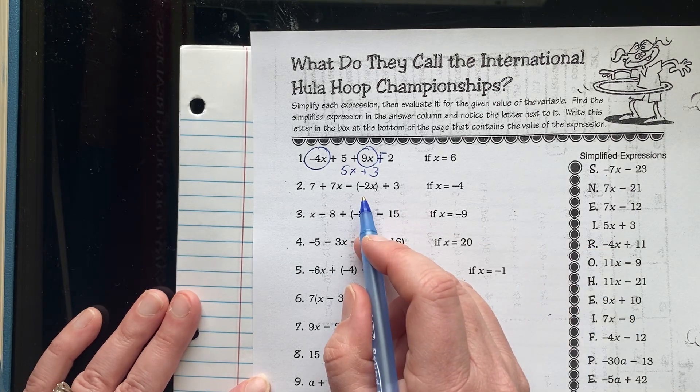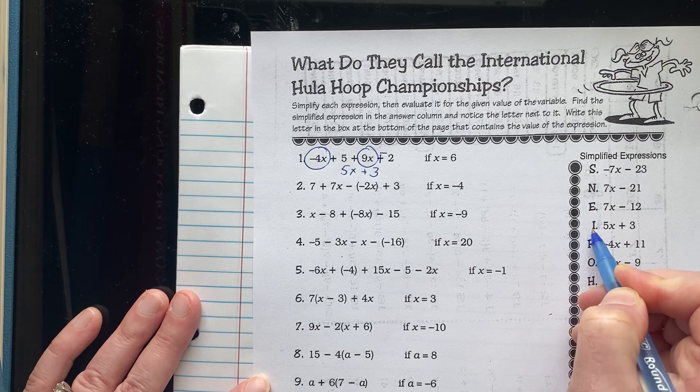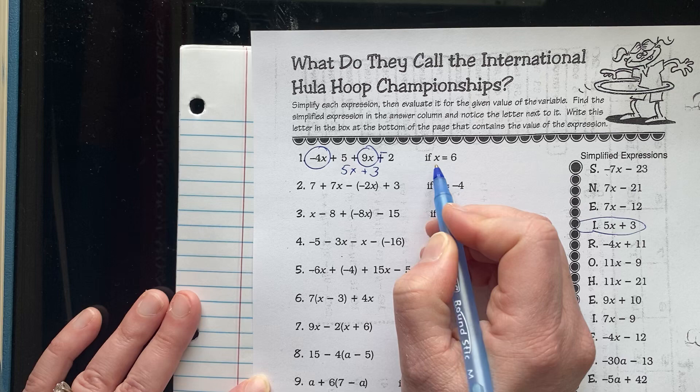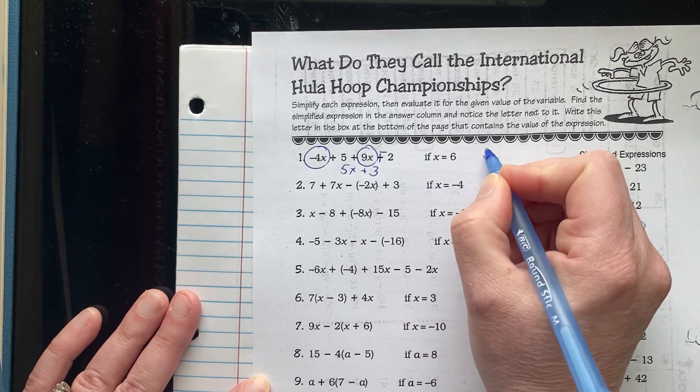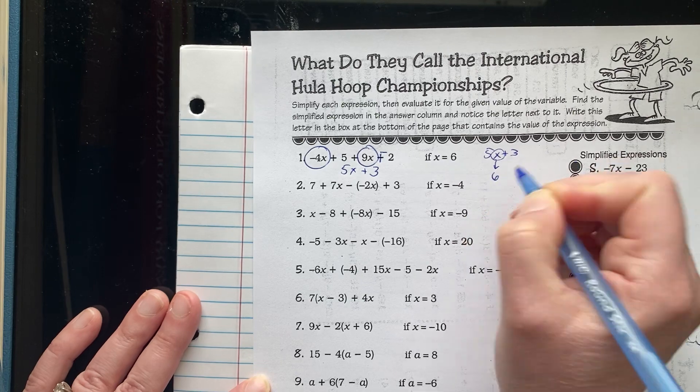So 5x plus 3 is right here. Now I don't know where to put the letter until I solve it. I substitute and solve here: 5x plus 3, and it's telling me to take that x and change it to 6. This is the no-symbol form of multiplication.